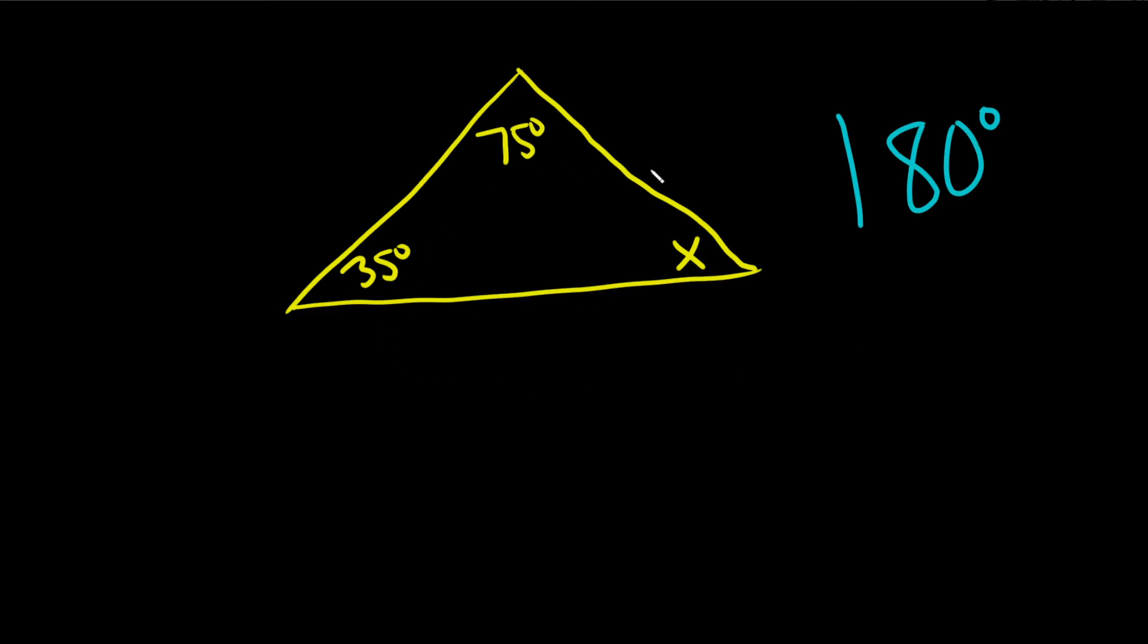So we'll start the problem by just taking all of these and adding them up, and setting the result equal to 180. So 35 degrees plus 75 degrees plus x, all of that is going to be equal to 180 degrees.